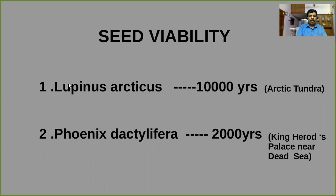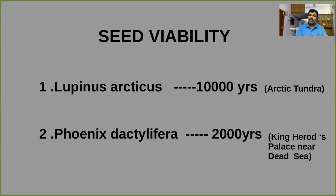Some seeds can maintain viability for thousands of years. One of the most important examples is Lupinus arcticus. The seeds were excavated from Arctic tundra and are able to maintain viability for 10,000 years. After 10,000 years of dormancy, the seed can germinate and produce new plants.